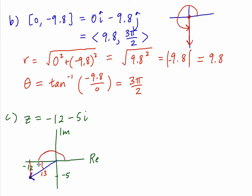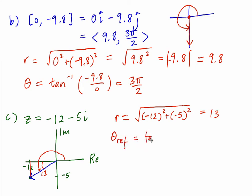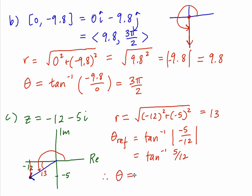We need to find the reference angle and place it in quadrant three. r equals the square root of negative 12 squared plus negative 5 squared, which equals positive 13. The reference angle is the tan inverse of the absolute value of the opposite over the adjacent — that is, tan inverse of 5 over 12 — which cannot be simplified further without a calculator. The full angle is obtained by adding to pi, giving pi plus tan inverse of 5 over 12 as the direction for this vector.